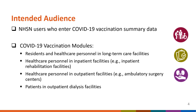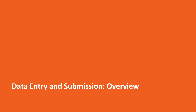Currently, there are four COVID vaccination modules in NHSN focused on data collection. These include residents in long-term care facilities, or LTCFs; healthcare personnel in long-term care facilities; healthcare personnel in non-long-term care facilities, such as ambulatory surgical centers and hospitals; and patients in outpatient dialysis facilities. The next few slides will give an overview of data entry and submission of COVID-19 vaccination summary data in NHSN.